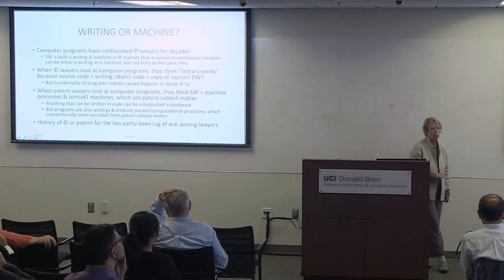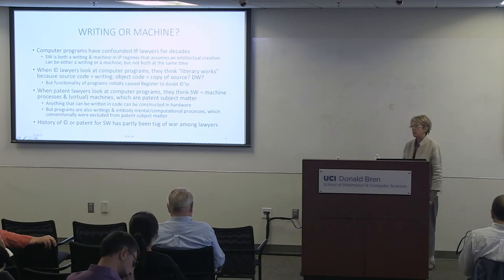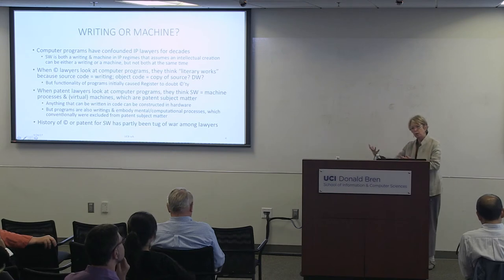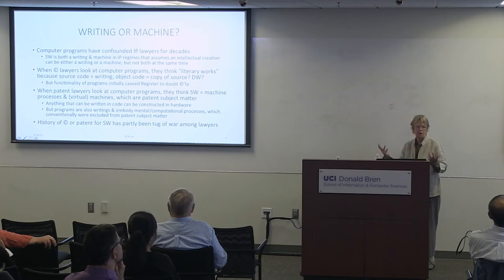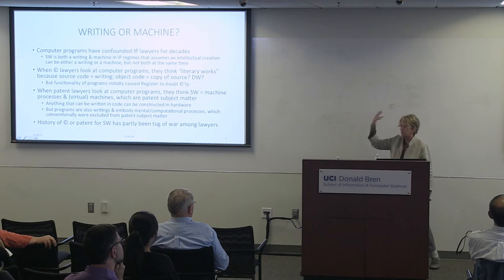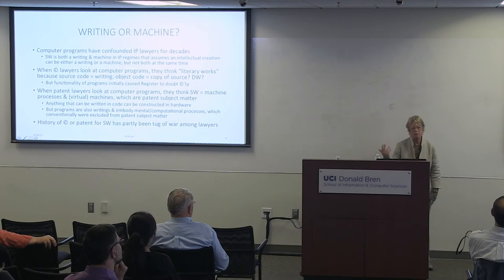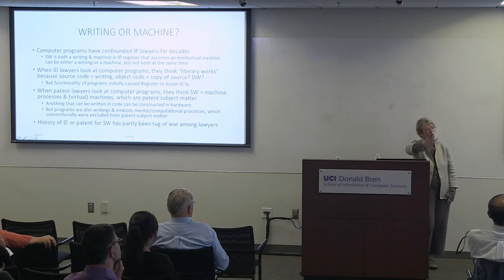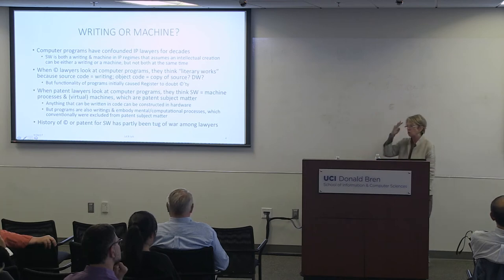Why is this such a troubling subject matter? Computer programs are both a writing and a machine — and we have a legal regime that says something can be either a writing or a machine, but not both. When copyright lawyers look at computer programs, they say they're literary works — you write a program the way you could write a novel. And because source code is a writing, it's protectable by copyright law. But that metaphor causes you to ignore the functionality of programs.